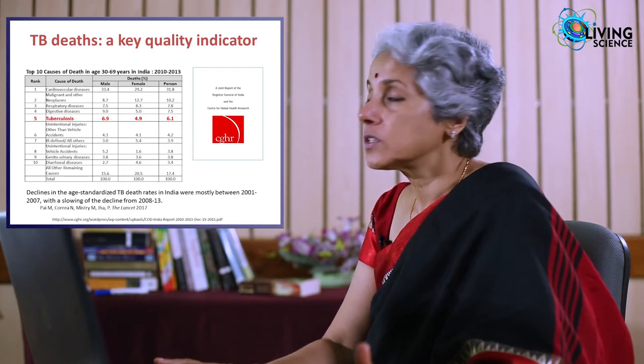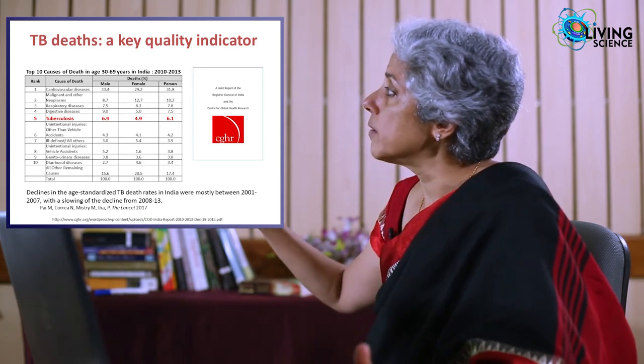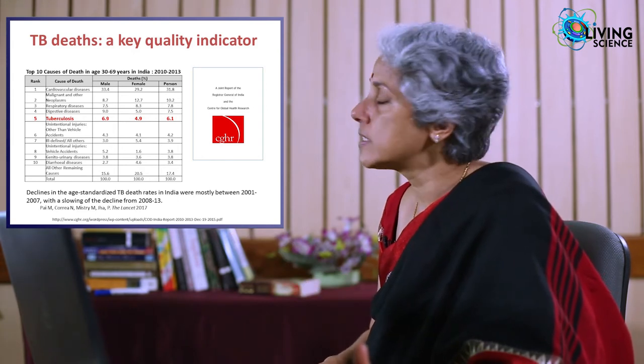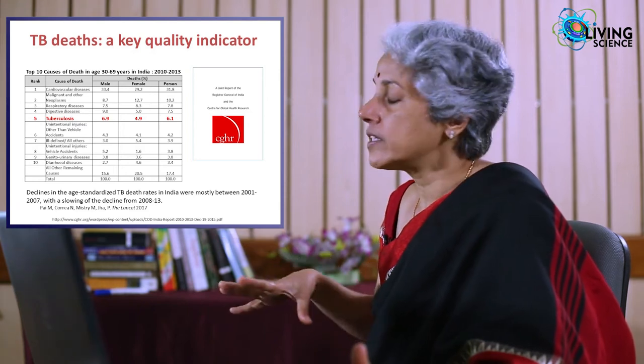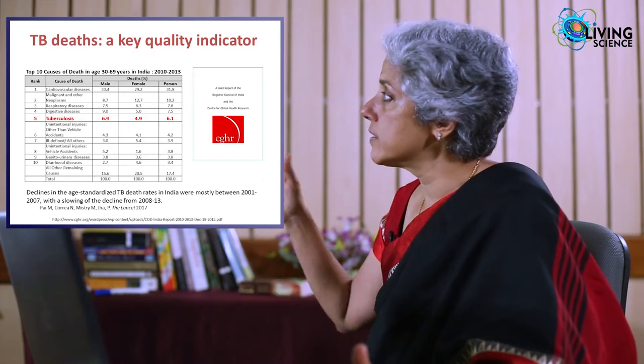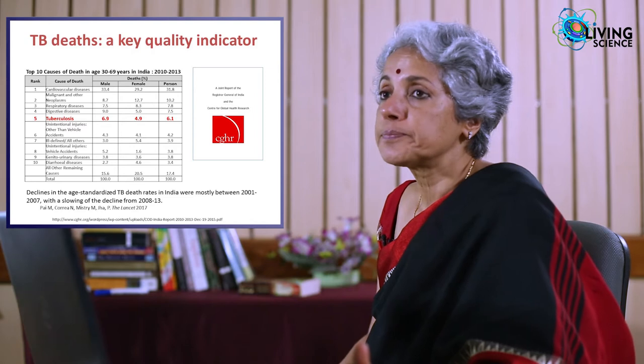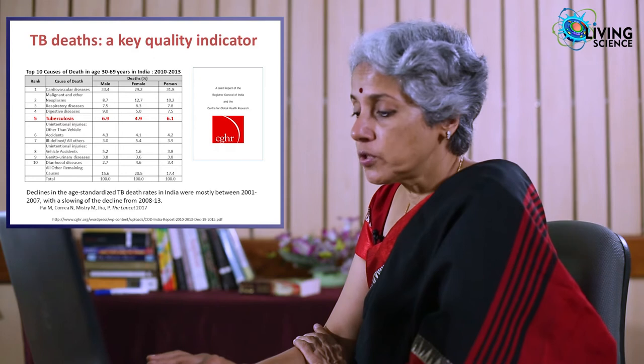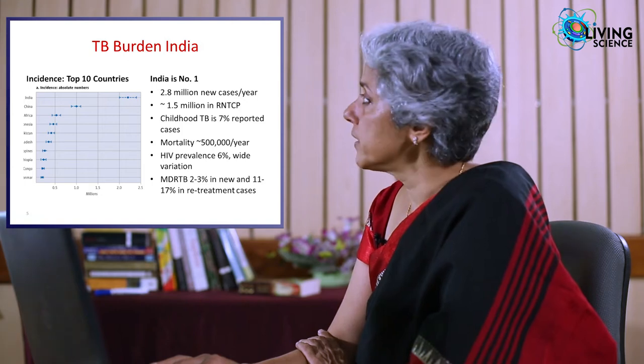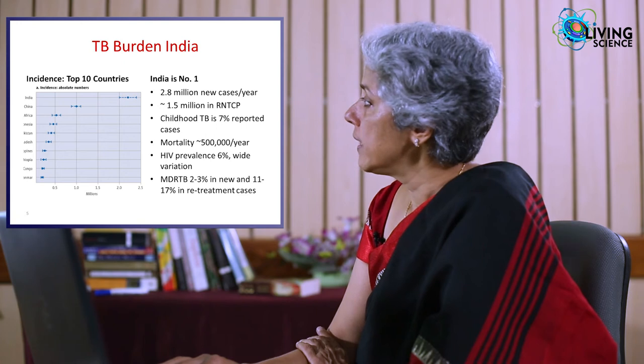TB deaths can be a key quality indicator for health systems. TB is the fifth leading cause of death in India among those aged 30 to 69, and the number one cause among infectious diseases, accounting for about six percent of deaths in the young adult age group. Globally, India is number one with about three million new cases per year, of whom only about half are reported to the RNTCP. We still lose about half a million people a year to TB, and MDR-TB is about 2–3 percent among new cases and 12–15 percent among previously treated cases.